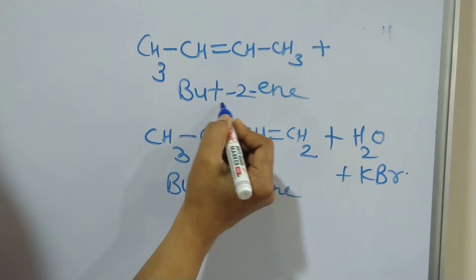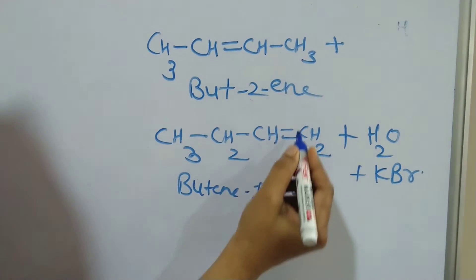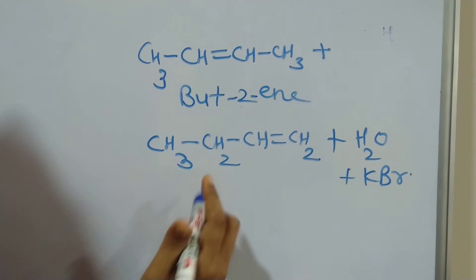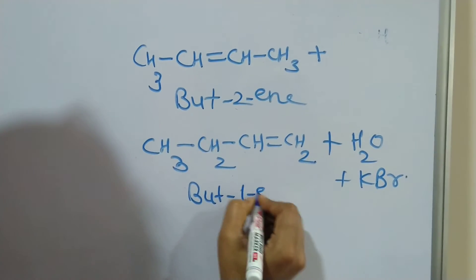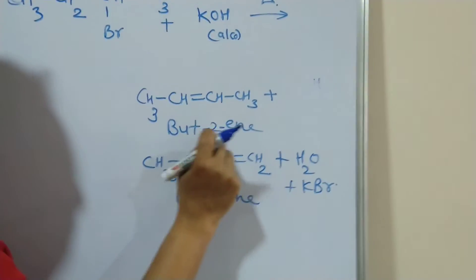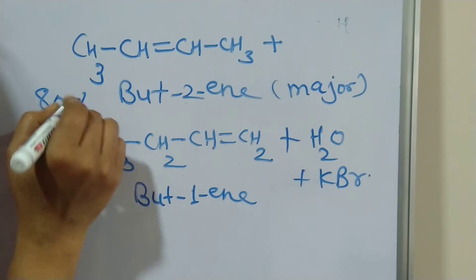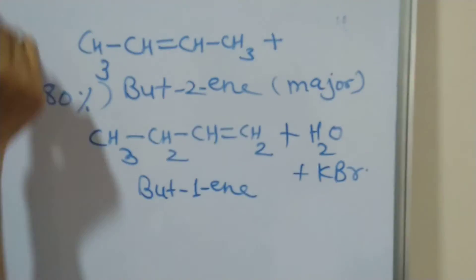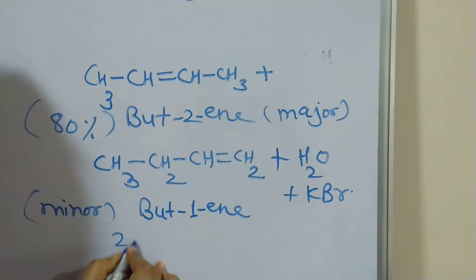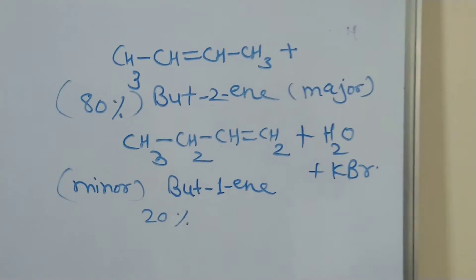The double bond is between carbon number two and three, so the name of the product is but-2-ene. The double bond is between carbon number one and two, so the name is but-1-ene. In this reaction, but-2-ene is the major product, obtained at 80%, and but-1-ene is the minor product, obtained at 20%.